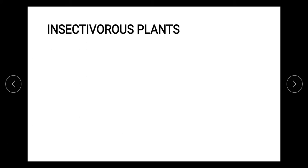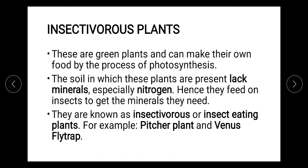The next category is insectivorous plants — insect-eating plants. These plants have insects as their food, for example the pitcher plant and Venus flytrap. Importantly, these are actually green plants that can perform photosynthesis. They eat insects because the soil in which they are growing lacks different kinds of minerals, especially nitrogen.